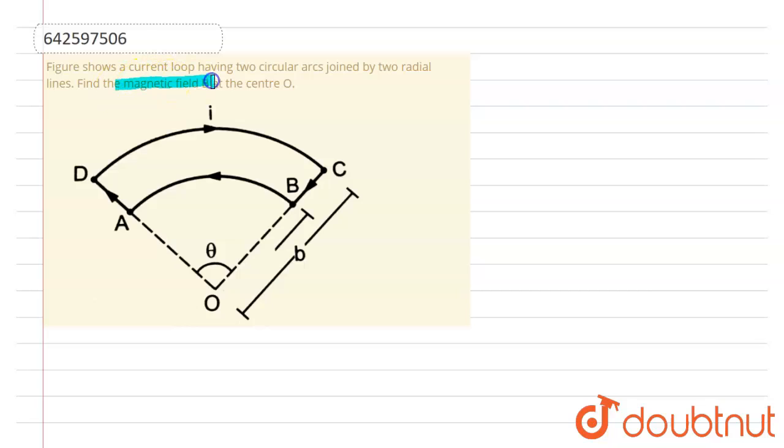So first of all, we are going to consider DC as section one and CB as section two, and BA as section three and AD as section four.